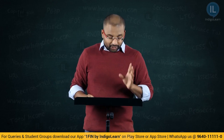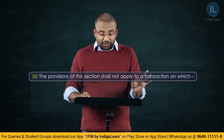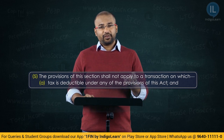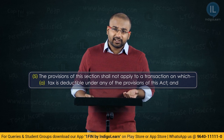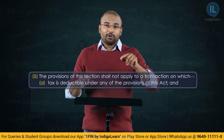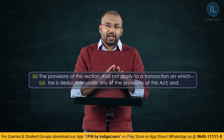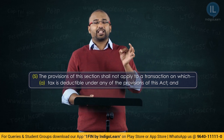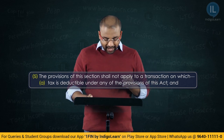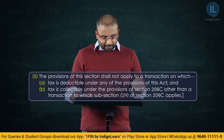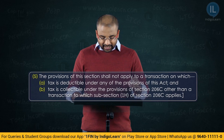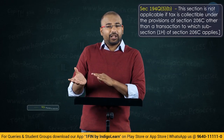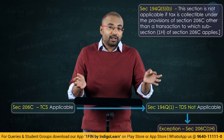Subsection 3 is just an empowering section — if any difficulty arises in giving effect to the provisions, the Board may, with the previous approval of the Central Government, issue guidelines for the purpose of removing such difficulty. Subsection 4 says every guideline issued by the Board under subsection 3 shall — and 'shall' means mandatory — as soon as may be after it is issued, be laid before each house of Parliament and shall be binding on the income tax authorities and the person liable to deduct tax. Subsection 5 — the most important one — says the provisions of this section shall not apply to any transaction on which tax is deducted under any other provisions of this act.